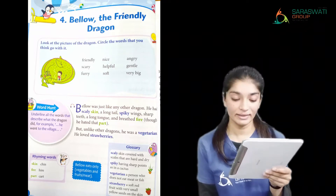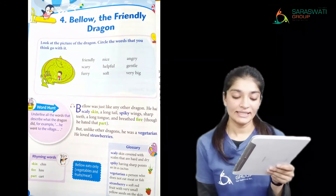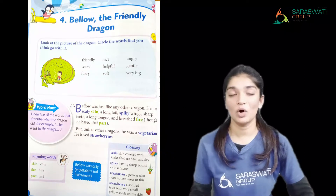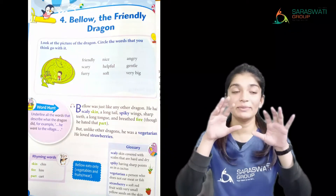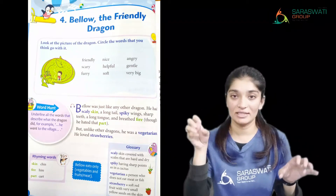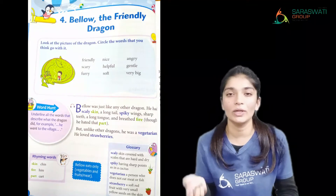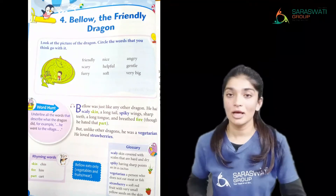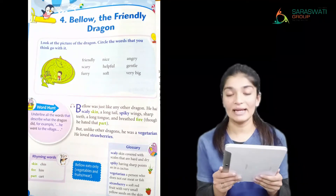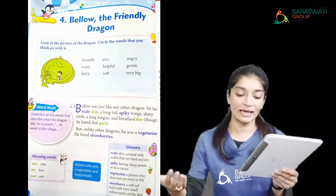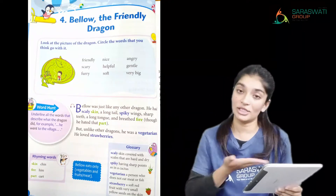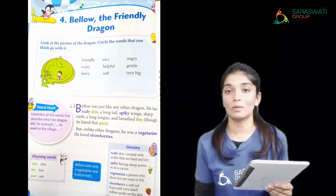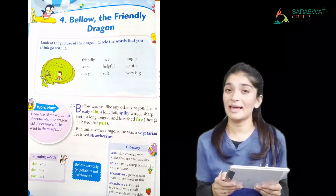Next is 'scaly' — skin covered with scales that are hard and dry. If you have seen dragons, on their body there are patches called scales that are extremely hard and extremely dry. The skin of dragons which is covered with scales is very hard and dry — that is called scaly.